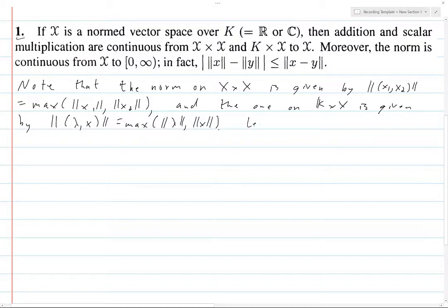Okay, so we're going to let x and y be in X, and lambda in K. Actually, let's do this right here. Lambda in K, and epsilon greater than zero.